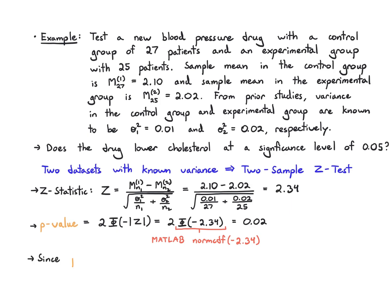Since our p-value of 0.02 is less than alpha = 0.05, we reject the null hypothesis. Informally, the conclusion we can draw is that at this significance level, the drug does lower cholesterol.